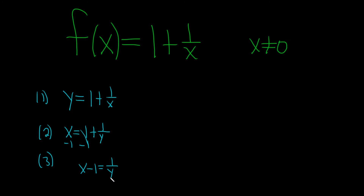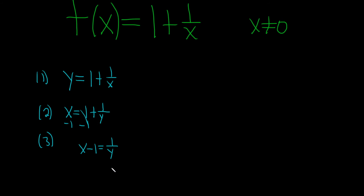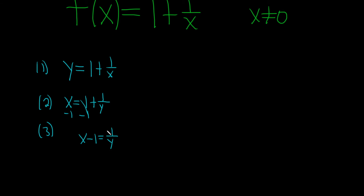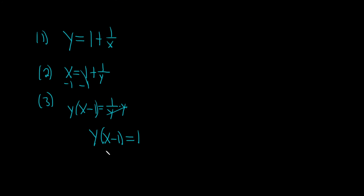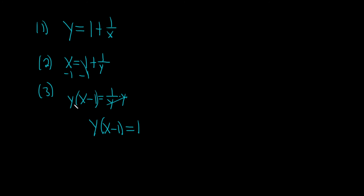We're looking for y, and it's still stuck on the bottom. So what we can do now is multiply both sides by y — so times y, times y. These cancel, and we get y times (x minus 1) equals 1. It's really tempting to distribute, but we're looking for y, so all of this is being multiplied by x minus 1. Let's just go ahead and divide by x minus 1, and that gives us y equals 1 over x minus 1.